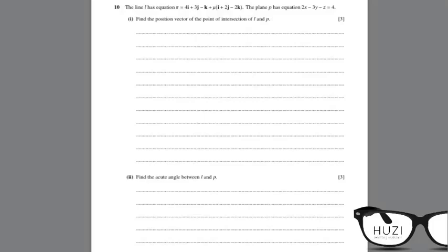Question number 10, the last question for this paper. The line L has the equation R equals 4i plus 3j minus k, the fixed point, plus mu times 1i plus 2j minus 2k. This is your direction vector. The plane P has the equation 2x minus 3y minus z equals 4, so 2, minus 3, minus 1 is your normal.